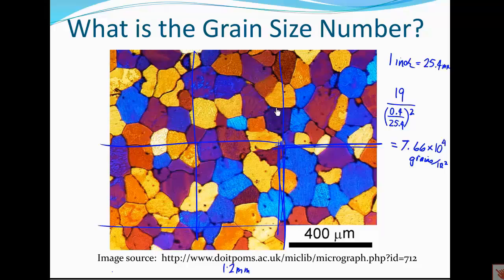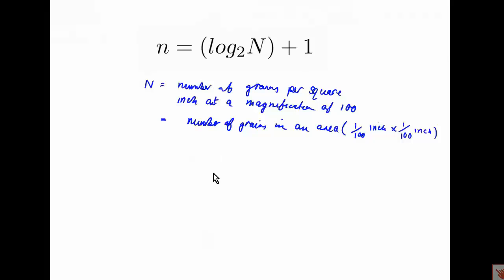Let's convert this now to an ASTM number. We have 7.66 × 10⁴ grains per inch squared. Uppercase N is the number of grains per square inch at magnification of 100. So N is going to equal the number of grains in an area one-hundredth of an inch by one-hundredth of an inch.